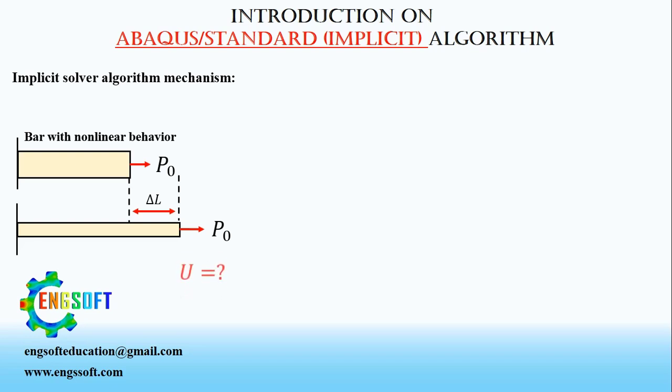The question is, how much the bar elongates due to the applied load. In other words, we are looking for the magnitude of displacement caused by the applied load. For this example, we can define a general static step in Abaqus software, which uses Implicit Solver algorithm to solve the problem.